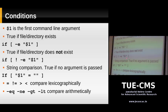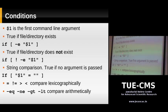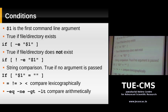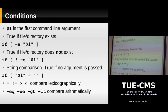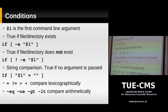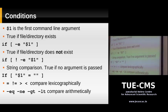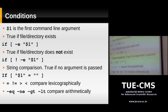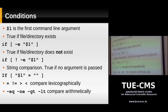$1 can be a file or a directory, and -e returns true for either. Use -d to return true only if it's a directory, and -f to return true only if it's a regular file (not a directory). There's a whole range of file tests available — just type 'help test' at the prompt to see them all listed.